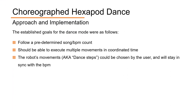Hi, I'm Arvind, and I'll quickly walk you through the approach and implementation for the choreographed hexapod dance. These are the goals that we established. Firstly, we want the robot to follow a predetermined song or beats per minute count that could be input by the user. Secondly, the robot should be able to execute multiple movements in a coordinated fashion. And lastly, the robot's dance steps should be able to be chosen by the user and would still stay in sync with the beats per minute.